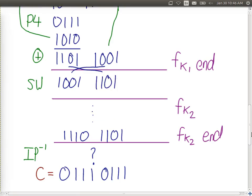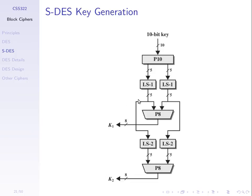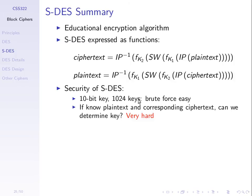Any questions on simplified DES? So maybe unsimplified DES — the real one. In simplified DES, we can write the operations as a set of functions. To obtain the ciphertext, we take the plaintext, apply the initial permutation, apply some function f using key K1, swap the halves, apply the function again using K2, and then do the inverse initial permutation.